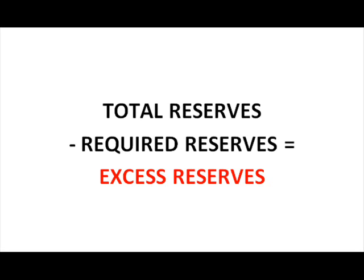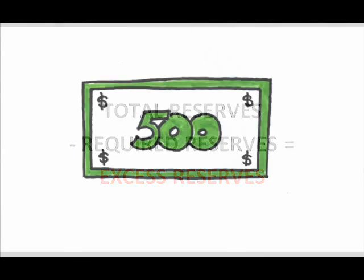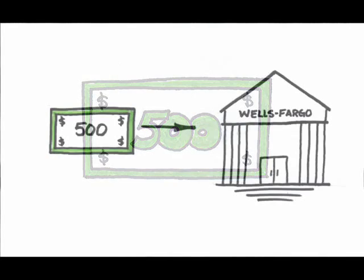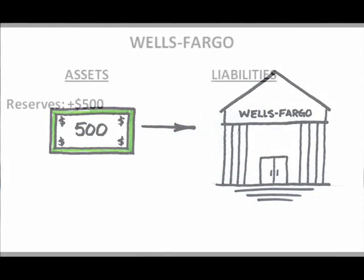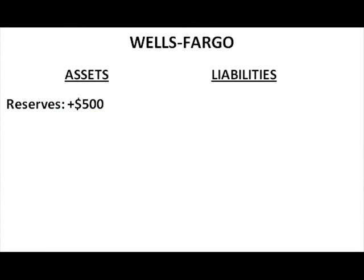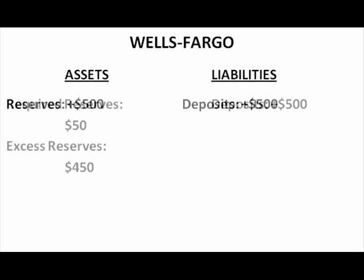Banks create money by lending money, and the money that they can lend is the excess reserves. Let me give you an example. Let's say that I move to this area bringing $500 with me, which I use to open an account with Wells Fargo. This means Wells Fargo now has an additional $500 in assets — my deposit — but also an additional $500 in liabilities, since I could walk in at any time to get my money back. Supposing the required reserve ratio is 10%, Wells Fargo must hold on to $50 of my deposit.